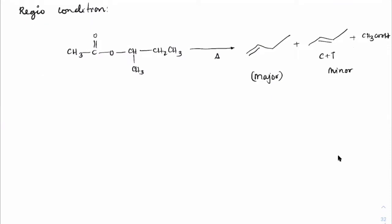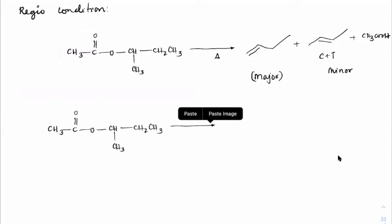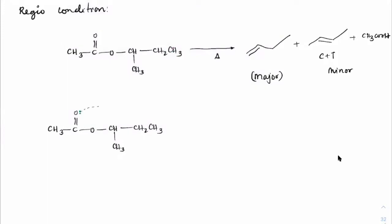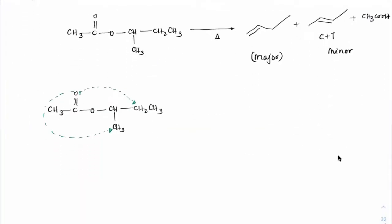Hofmann product comes as major product. The reason: the oxygen can extract a proton from either beta carbon. During the cyclic transition state, steric reasons make it difficult to form the ring at the more hindered carbon, while the less hindered carbon allows much easier orientation of hydrogens for elimination.